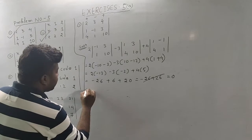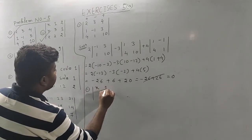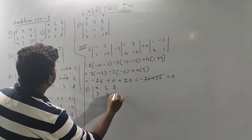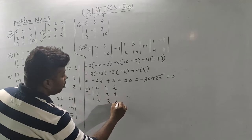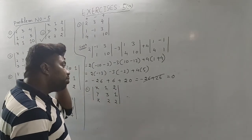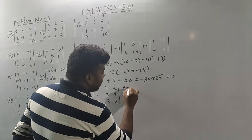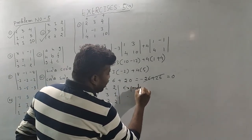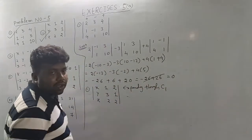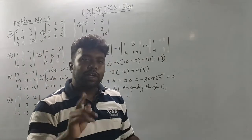Second question. The second question: we expand normally for x, y, z. We start with a different approach — expanding the determinant color-wise. I am going to determine that row-wise or column-wise.